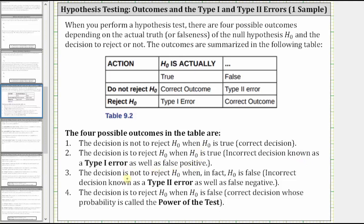Three, the decision is not to reject the null hypothesis when in fact the null hypothesis is false. This is another incorrect decision known as a type two error, as well as a false negative. And four, the decision to reject the null hypothesis when the null hypothesis is false. This is a correct decision whose probability is called the power of the test.